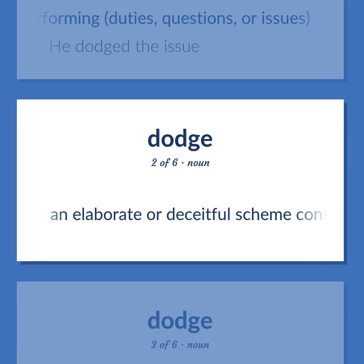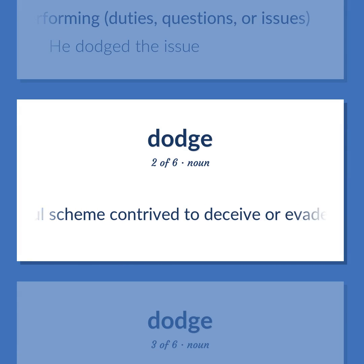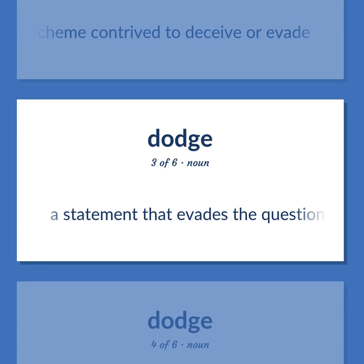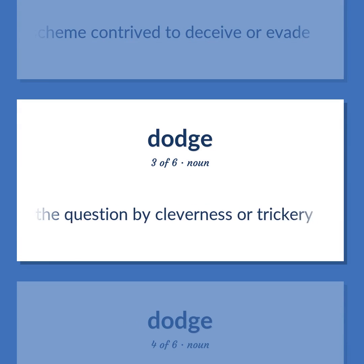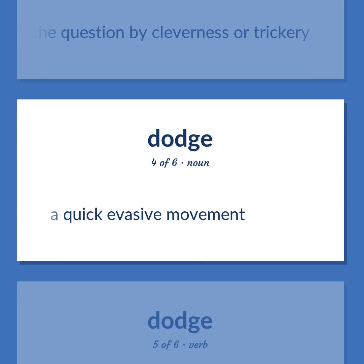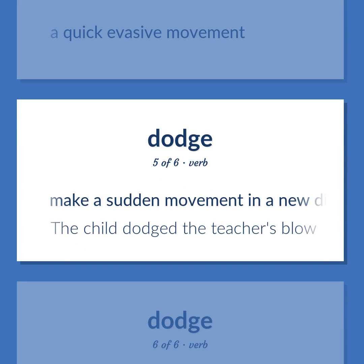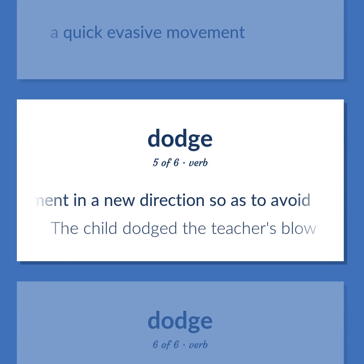Dodge: An elaborate or deceitful scheme contrived to deceive or evade. A statement that evades the question by cleverness or trickery. A quick evasive movement. Make a sudden movement in a new direction so as to avoid. The child dodged the teacher's blow.